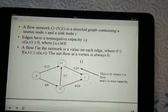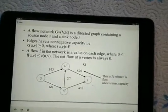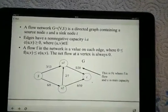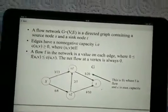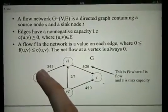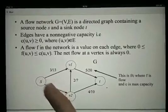A flow F in a network is a value on each edge where the value of the flow is less than or equal to the edge capacity. For example, these values on the left here.